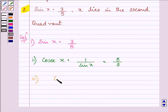Then one of the identities that is known to us is cos square x plus sin square x is equal to 1. Now let us substitute the value of sin x as 3 by 5 and find out the value of cos square x first and then cos x.